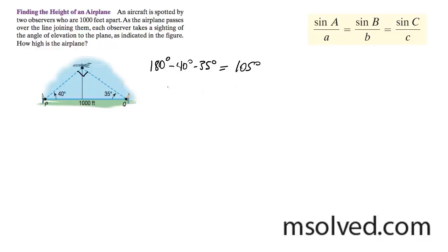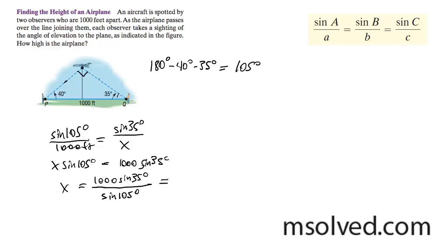All right, so we have this angle and then we can find each other side. I'll just go ahead and find each side. So sine of 105 over 1,000 feet is equal to, I'll do this side here. So I'll do sine of 35 over x. So x sine 105 is equal to 1,000 sine of 35 degrees. So when we solve this, we get x.